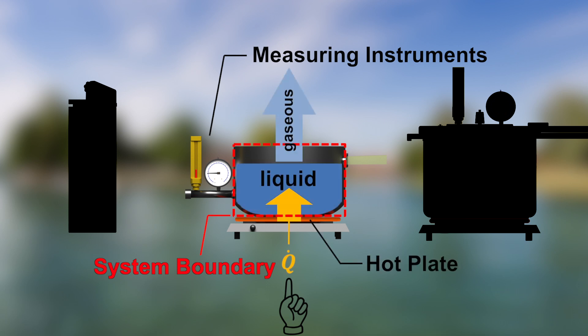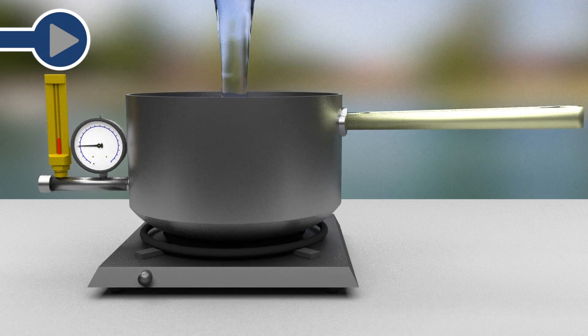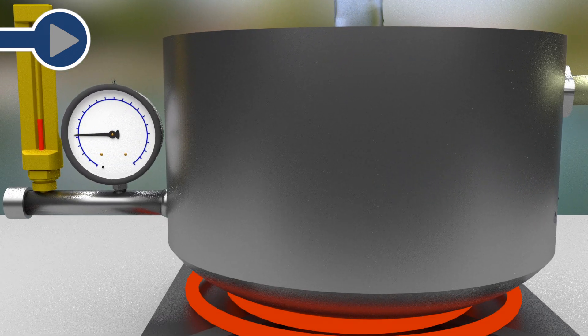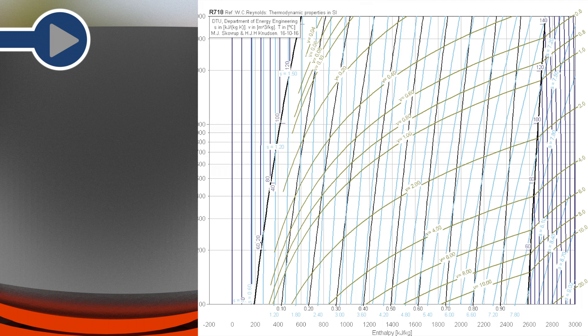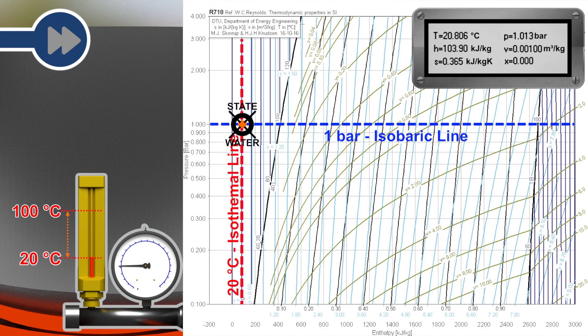At an absolute pressure of one bar, an open cooking pot is placed on a hot plate. We measure temperature and pressure in the pot. We fill the pot with water having a temperature of 20 degrees Celsius and switch the hot plate on. The state of a water is at one bar absolute and 20 degrees Celsius and can be plotted in a pressure enthalpy diagram.